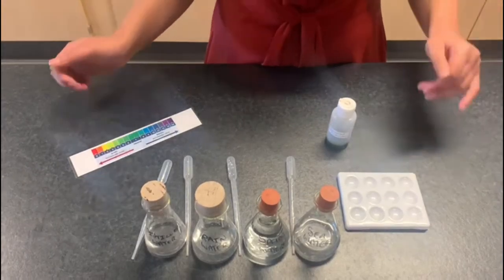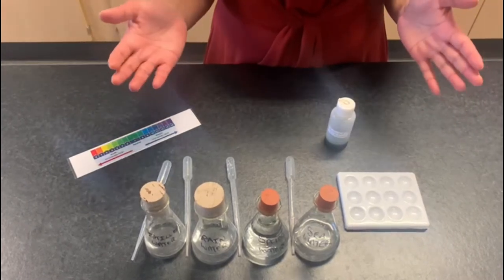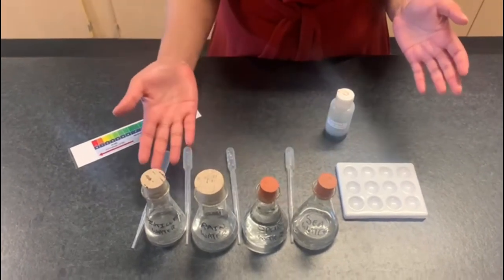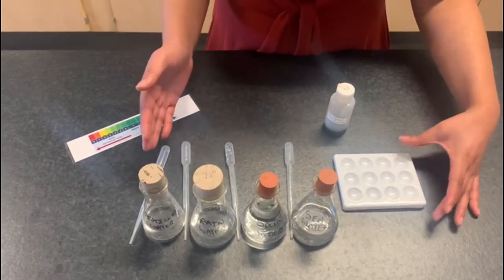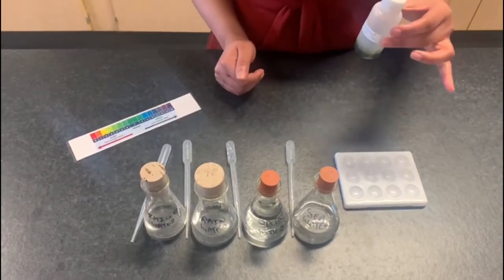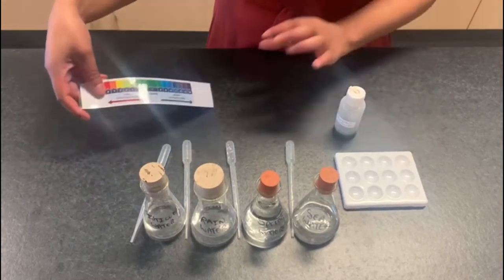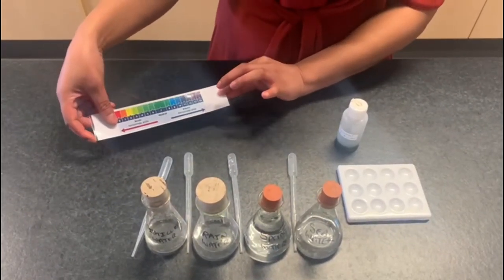In front of me I've got all the equipment we need for activity one. I've got the four different samples of water, a spotting tile, four different pipettes for each of the water samples, the universal indicator and the pH scale to check our results.